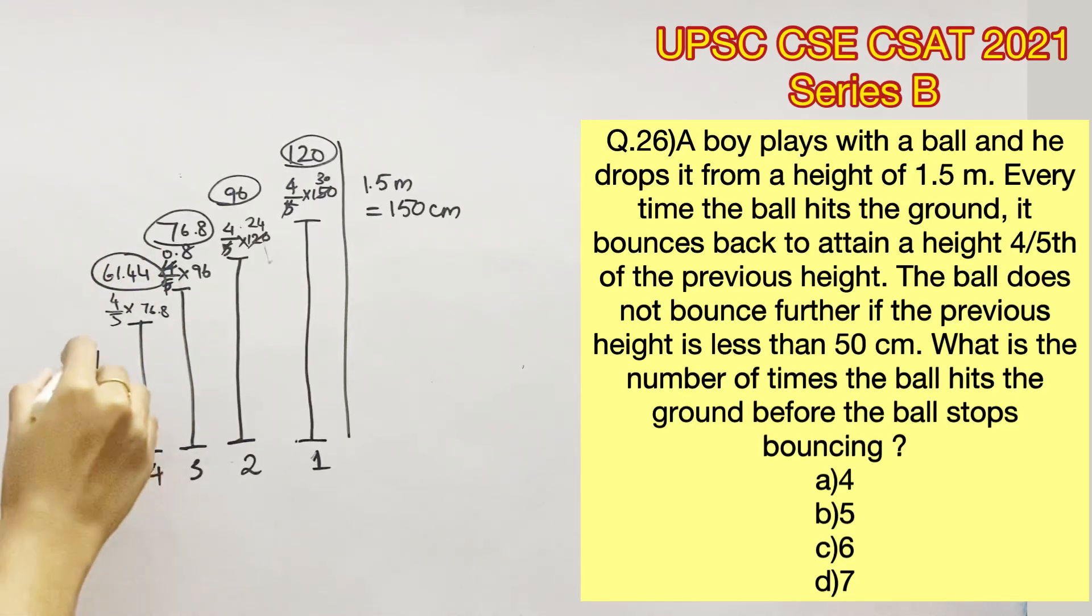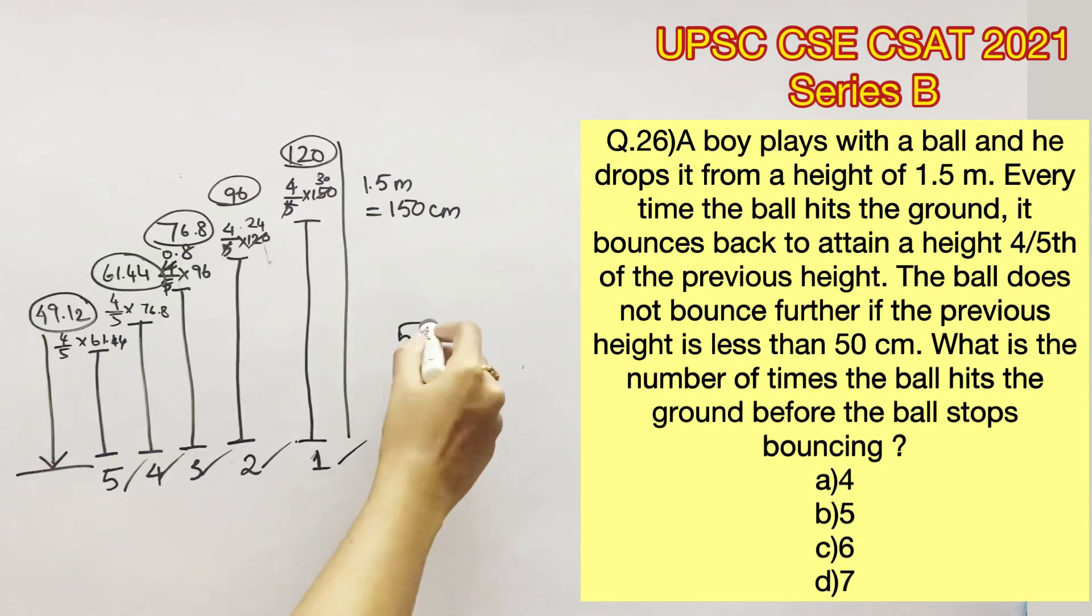From here, this ball hits the ground again for the fifth time and bounces back to 4/5 of 61.44, which is equal to 49.12. This value is now lesser than 50 centimeters, so the ball won't bounce back hereafter. So the ball has hit the ground exactly five times before it has stopped bouncing.